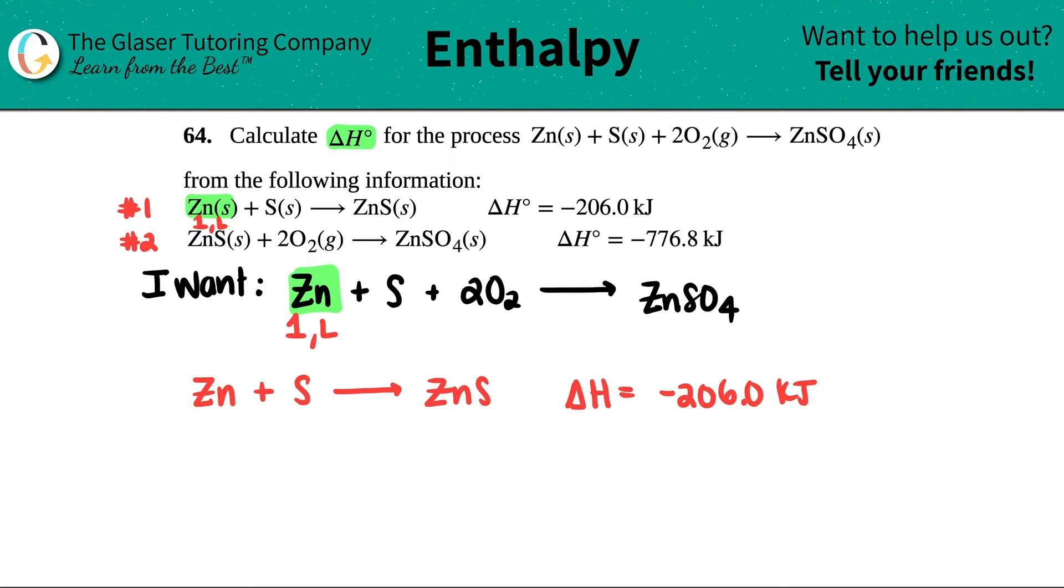Now, we just keep doing the same thing again. So let's go to the next substance, which is just the S. When I'm looking at the S, I want one S, and I want it on the left-hand side. Look at the two equations. Which one has the S? It's also equation number one. But here's the thing.